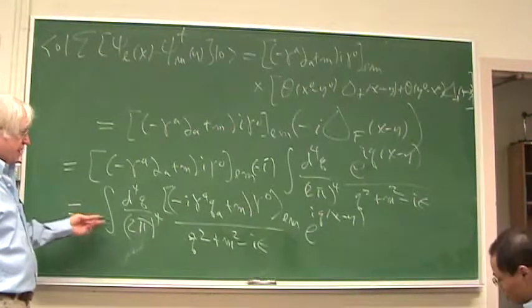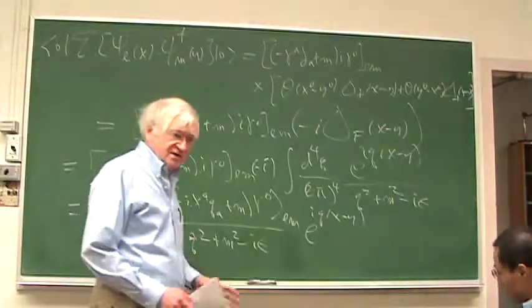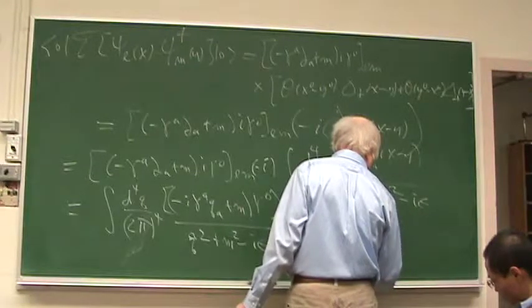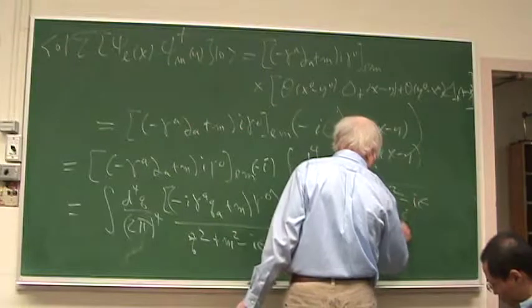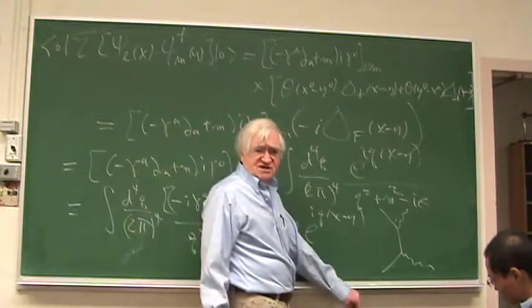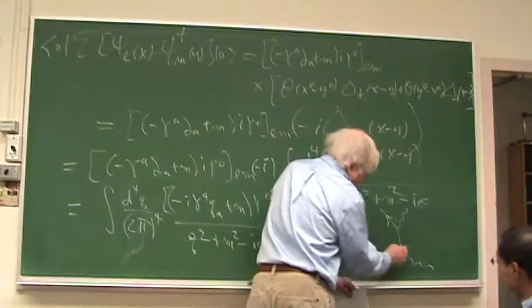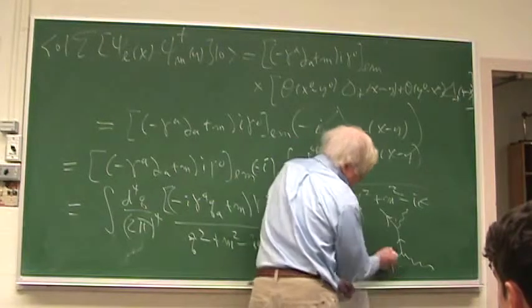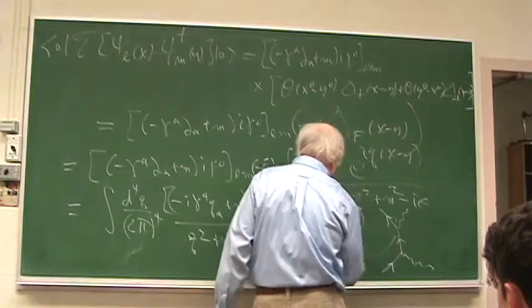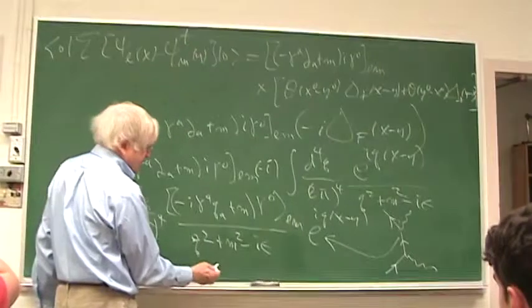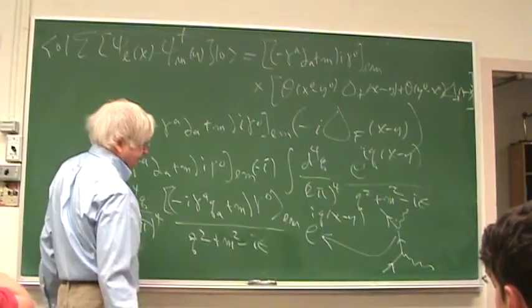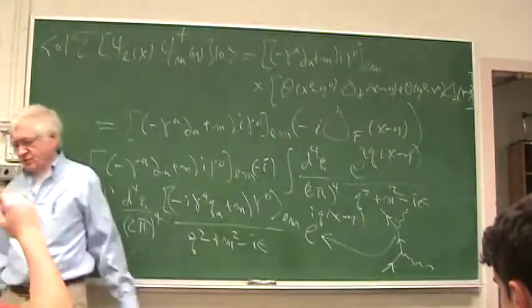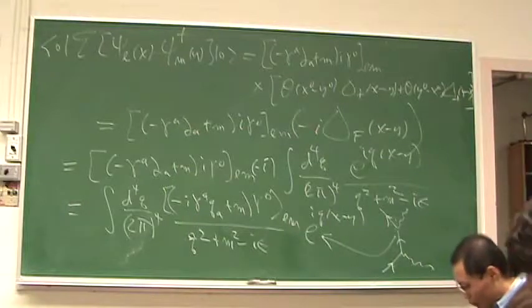So this is the final Dirac propagator. When I drew those lines earlier — here's a particular Feynman diagram representing electron-photon scattering in quantum electrodynamics. The electron comes in, here's a photon coming in and one going out. This vertical line in the Feynman diagram represents this propagator — this function of x−y. One then goes into Fourier space and everything is in momentum space.